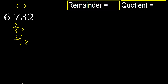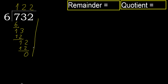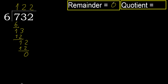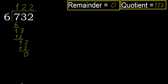Next, bring down to get 12. 6 multiplied by 2 is 12, which is not greater. Subtract: 12 minus 12 is 0. There is no next number, therefore we finish. Therefore 732 divided by 6 is 122, remainder 0.